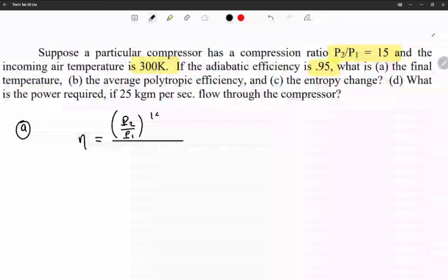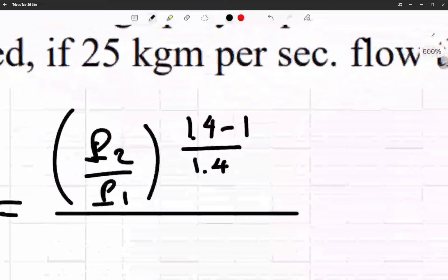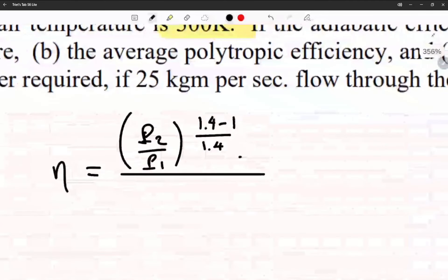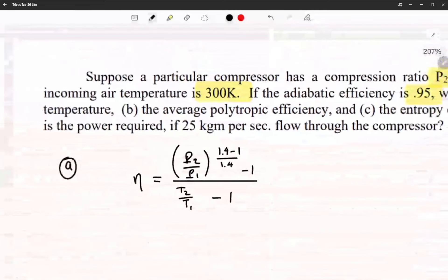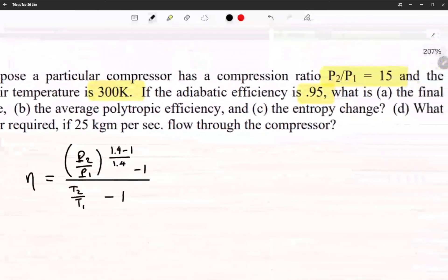to the power of 1.4 minus 1 over 1.4. When you take that, subtract by 1. In the bottom you have T2 over T1, take that, subtract by 1. In this case we have 0.95 equal to our pressure...